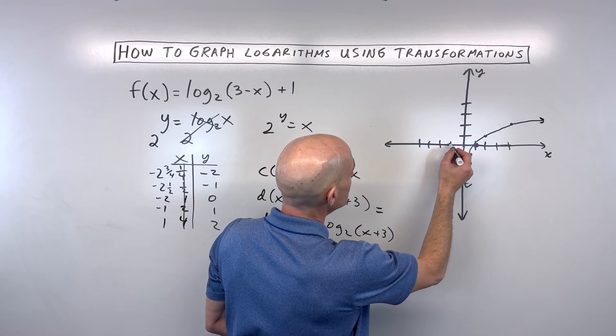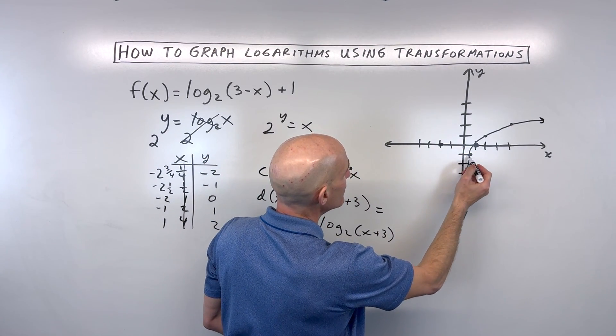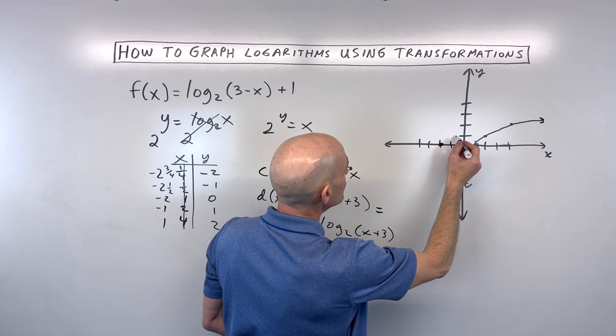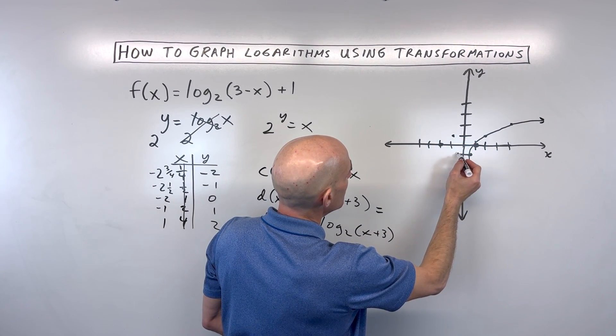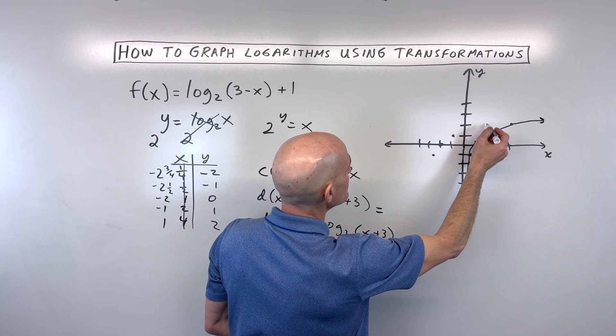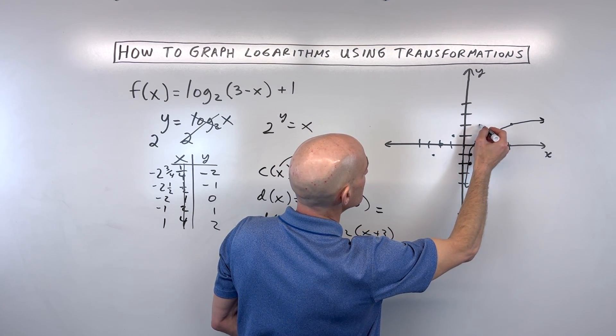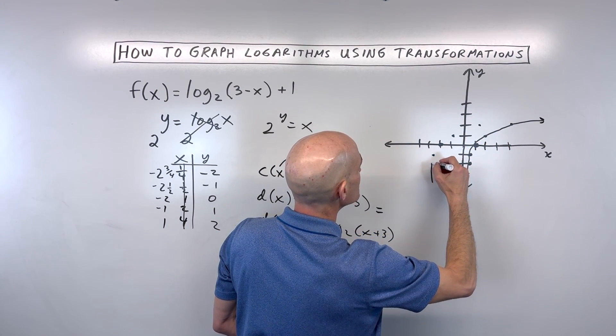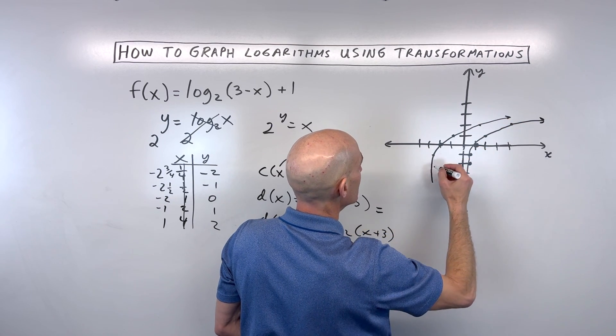So let's go ahead and do that. This point would be right about here, this point 1, 2, 3 would be right about here, this point 1, 2, 3 would be right about here. So I'm just kind of doing this rough here. So basically our graph looks something like this now.